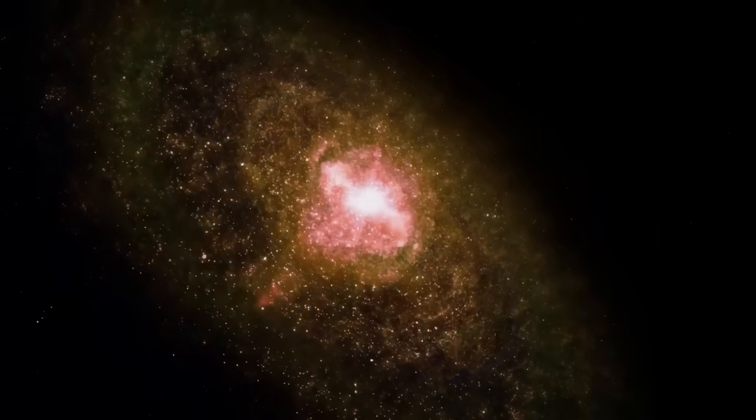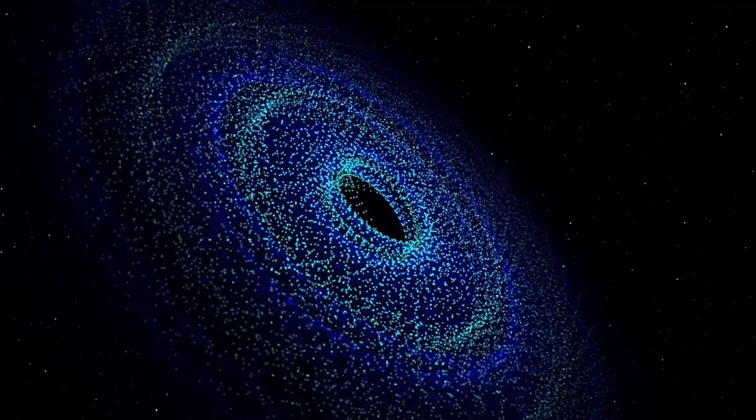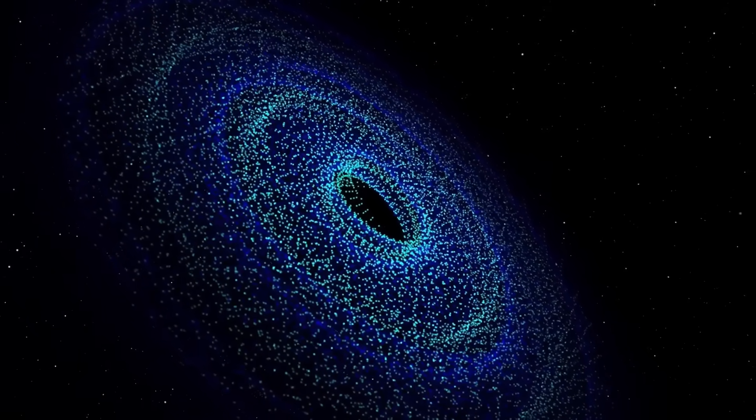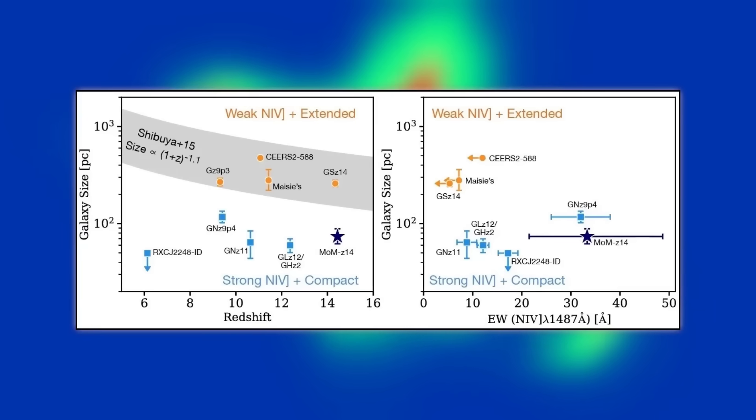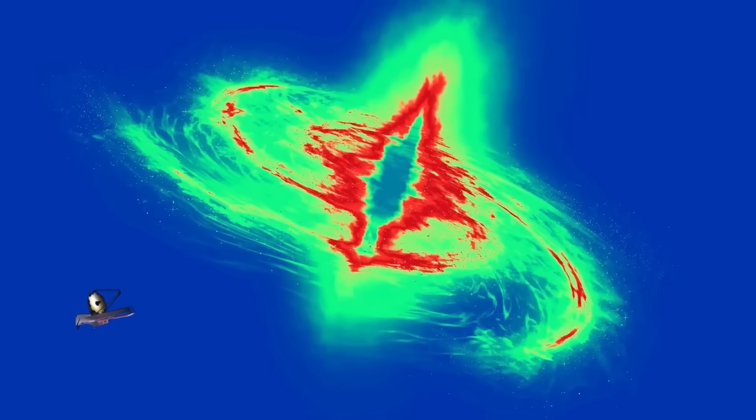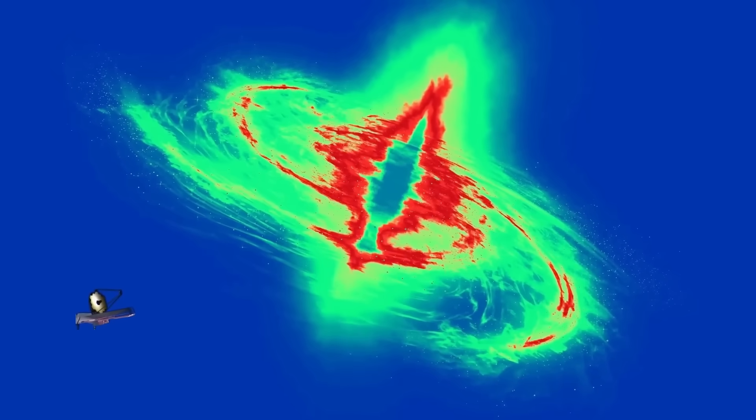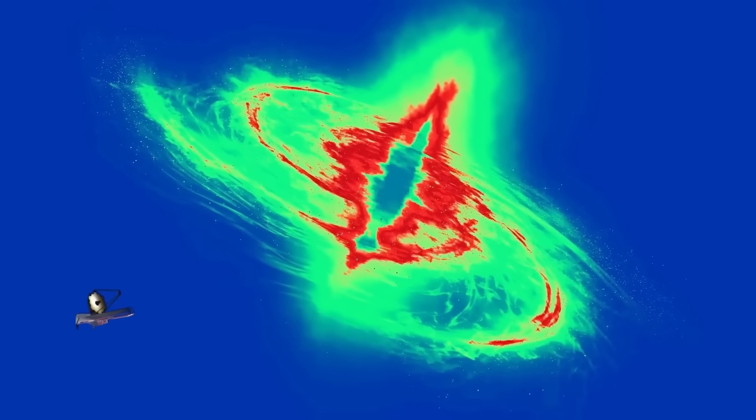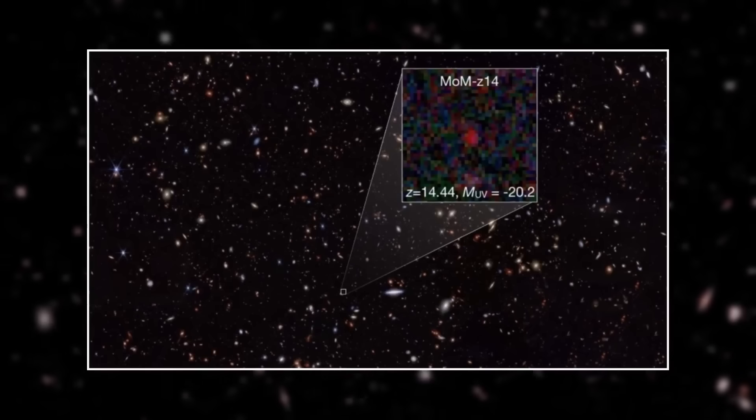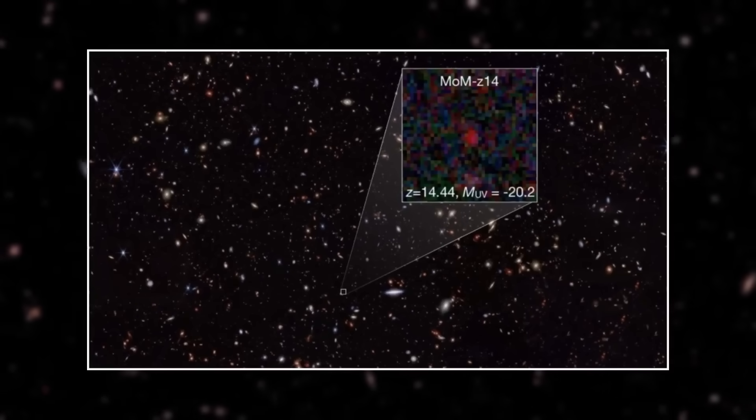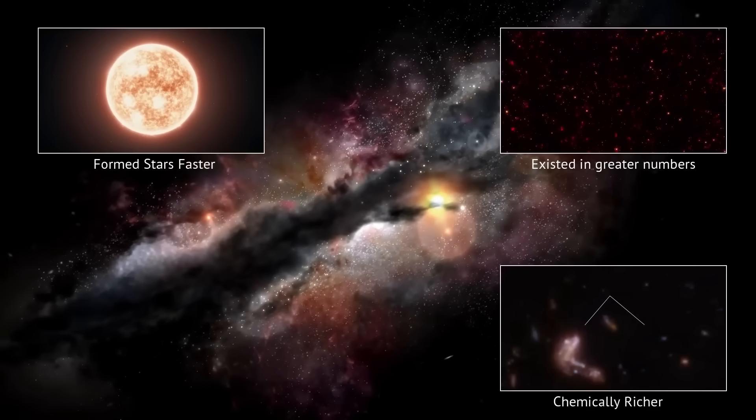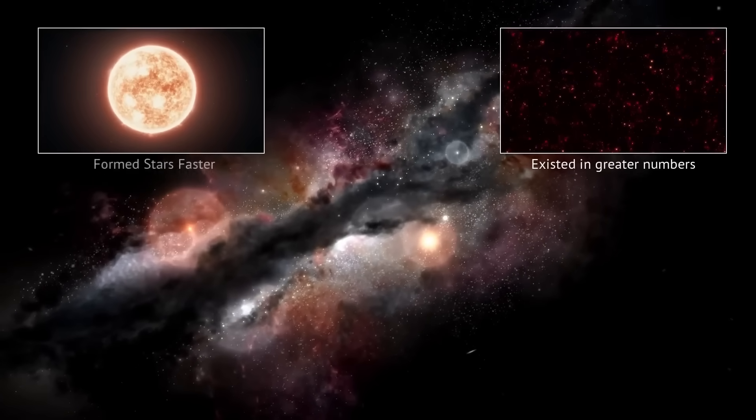It should have been messy, uneven, and sparsely populated. But instead, Webb revealed massive, mature galaxies, some larger and more organized than our own Milky Way, already formed just 300 to 400 million years after the supposed beginning of time. These were not infant systems. They showed structure, complexity, even signs of star generations that shouldn't have had time to exist.